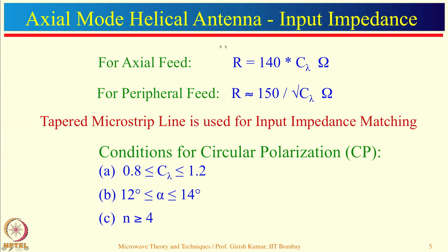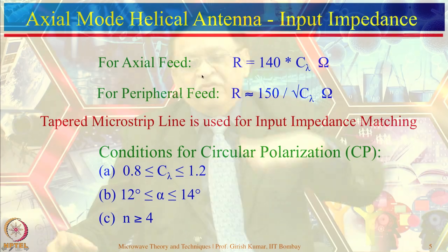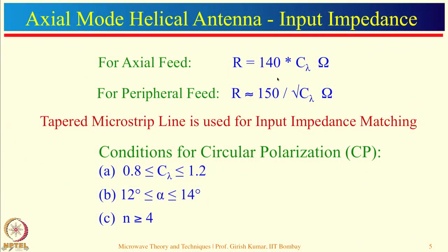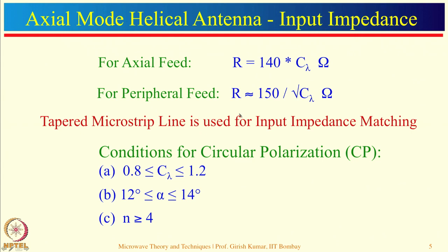The input impedance of the axial mode helical antenna depends on how it is fed. If fed using an axial feed, the input resistance is given by 140 × C_lambda. If fed along the periphery, R is given by a different expression. Since C_lambda is approximately equal to 1, the impedance is about 140 ohms for axial feed and approximately 150 ohms for peripheral feed. The reactive part is very small and can be neglected.